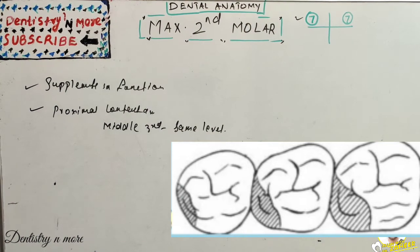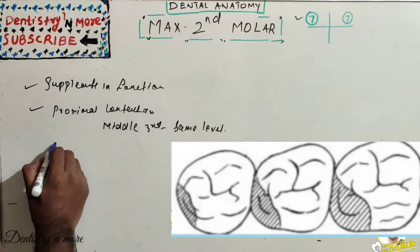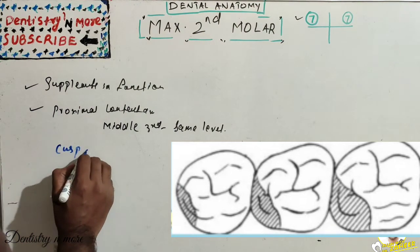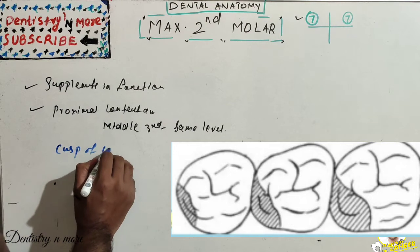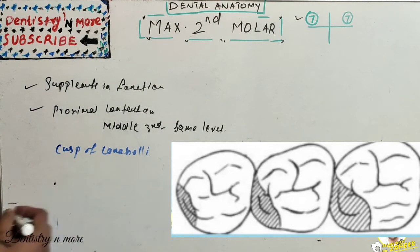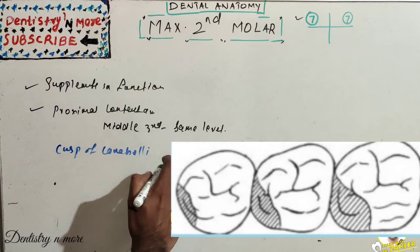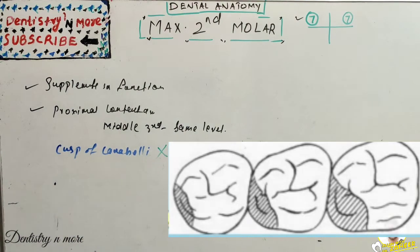There is no cusp of Carabelli on the maxillary second molar. The cusp of Carabelli is absent here and is present only in the maxillary first molar.